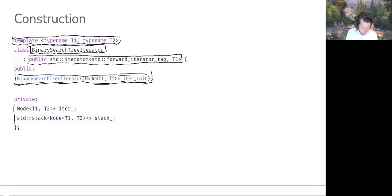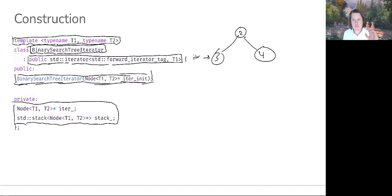Two private data members: iter is going to be a pointer to a node and it's going to preserve where we are. So if we had a tree, iter is going to preserve our state where we currently are. It's just going to be pointing to the node that we're currently visiting.